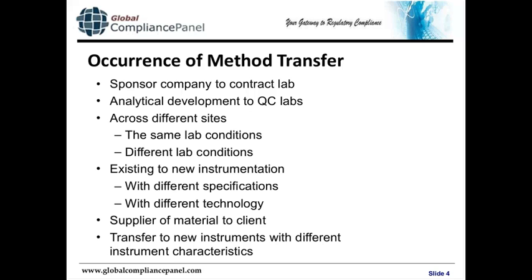If the new instrument has different specifications or different technology, a method transfer process should be used. Also, if you have a good supplier of reference material, they may provide the method for cross-checking the material, and this method also has to be formally transferred to new instruments with different instrument characteristics. And if a sponsor company has a validated method and wants to use a contract lab to run it without paying to develop a new one, they can use the same transfer process.